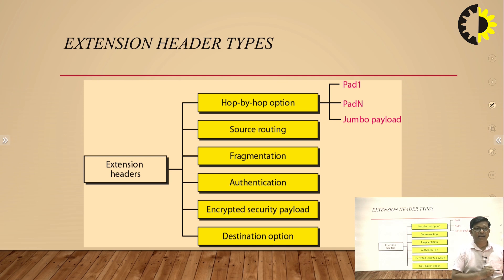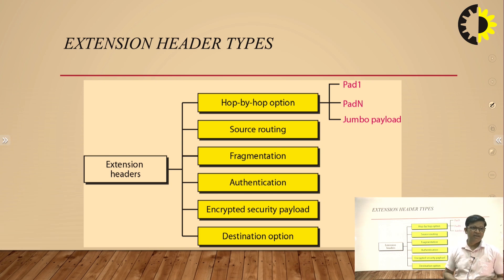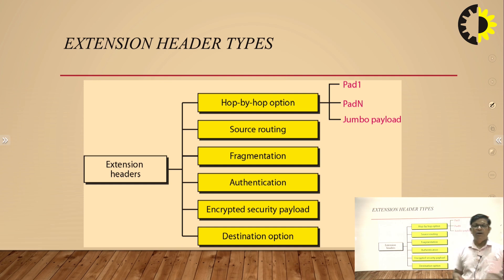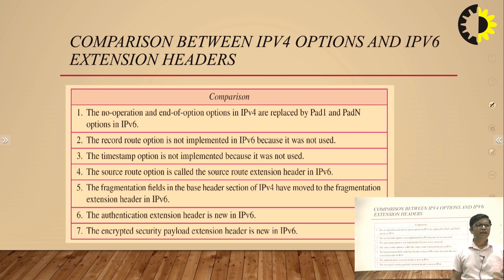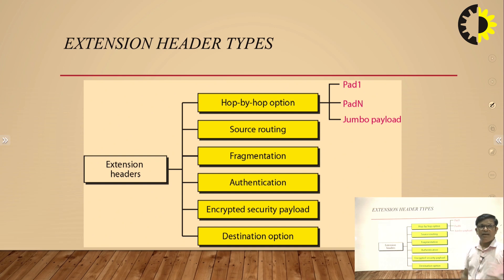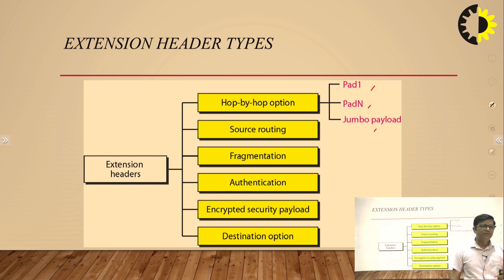Extension header types are a beauty of IPv6. The different types of extension headers are: hop by hop options, source routing, fragmentation, authentication, encrypted security payload, and destination options. In the hop by hop option there is pad 1, pad N, and jumbo payload — these are the different options available with the extension header.